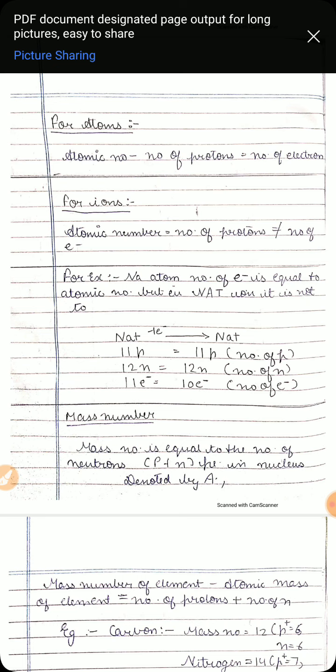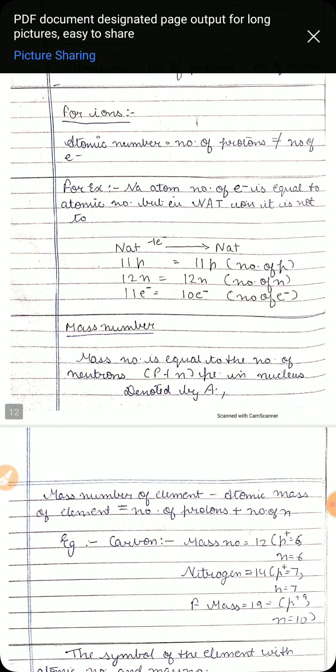Now let's discuss about valency. What is valency actually? Valency is the number of electrons that an atom can gain, lose, or share — that will be its valency. I will explain you more with one simple example. If I am talking about sodium, then sodium is having atomic number 11. Atomic number is always equal to number of electrons, which is always equal to number of protons.